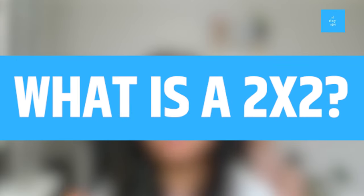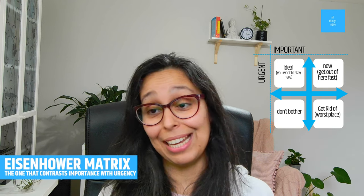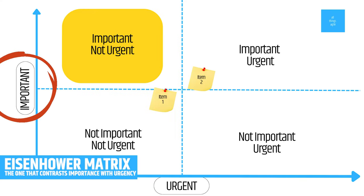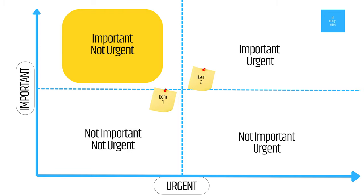What is a 2x2? The 2x2 matrix is a visual framework for prioritizing tasks or projects, helping you decide what are the things that you want to work on. You've probably heard of the most famous one — it's called the Eisenhower matrix, and it contrasts importance with urgency. Importance is how much value your work will create for your customers, users, or business goals. Urgency is how soon your work needs to be done, either because of deadlines, dependencies, or market opportunities.